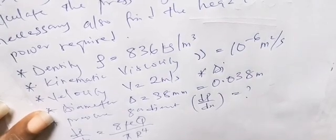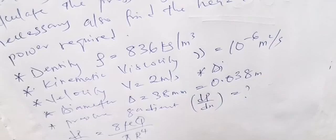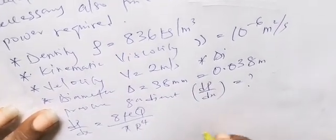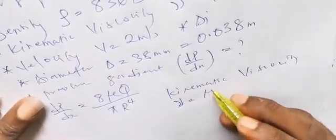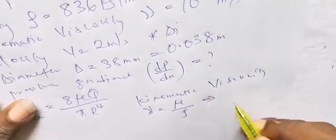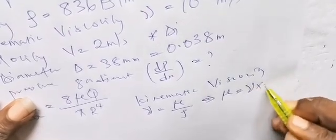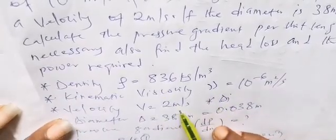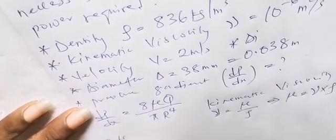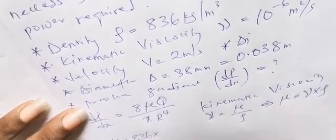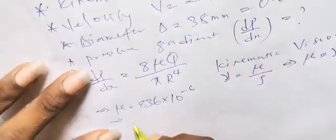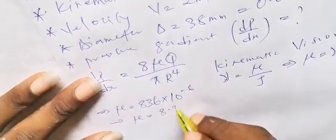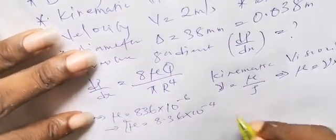The relationship between kinematic and dynamic viscosity is: kinematic viscosity nu equals dynamic viscosity mu over density rho. Therefore, dynamic viscosity mu equals kinematic viscosity times density. With density 836 kg/m³ and kinematic viscosity 10 to the power of minus 6 m²/s, dynamic viscosity mu becomes 836 times 10 to the power of minus 6, giving us 8.36 times 10 to the power of minus 4 newton-seconds per meter squared.